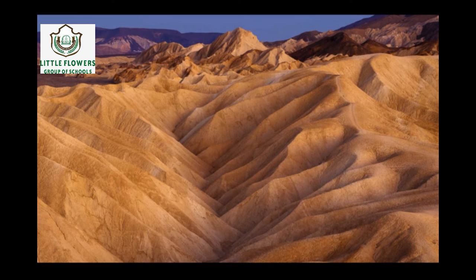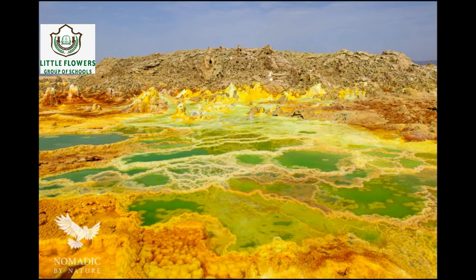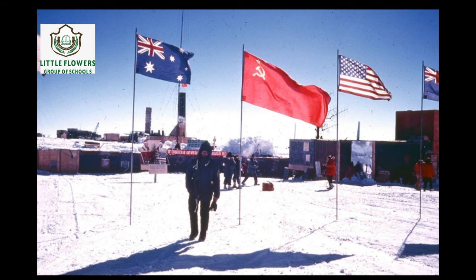Number one: it is the hottest place in the world. The answer is Death Valley — it is a desert in eastern California. Number two: it is the hottest inhabited place in the world. The answer is Dallol, Ethiopia.